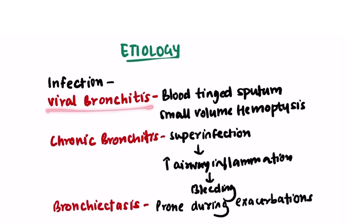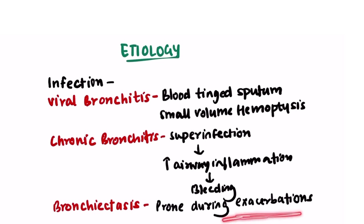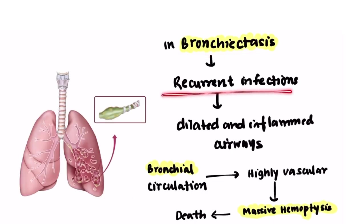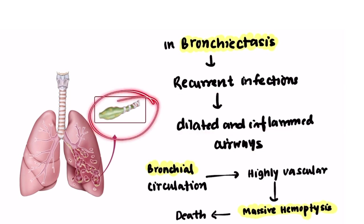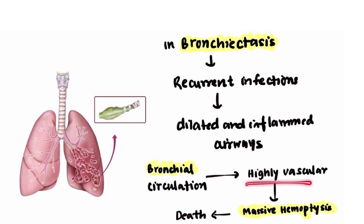Viral bronchitis is associated with blood-tinged sputum and often causes small-volume hemoptysis. In chronic bronchitis, due to recurrent and super-infections, there is increased airway inflammation which can lead to bleeding. Bronchiectasis is associated with hemoptysis during exacerbations. Due to recurrent infections, there are dilated and inflamed airways, and whenever it involves the bronchial circulation — which is a higher-pressure system — massive hemoptysis and even death can occur.